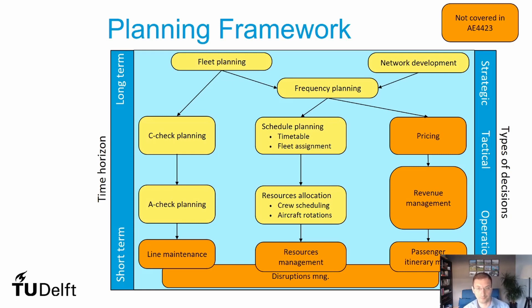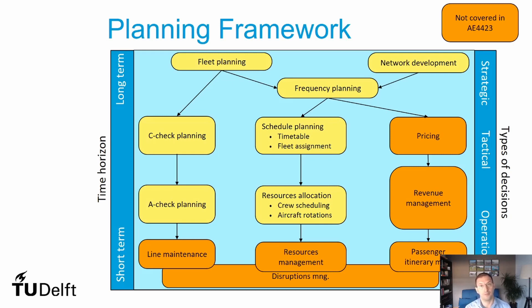Let's start with the middle one. At the tactical level, one year before operations, we start defining our timetable — so, to where are we going to fly and at what time — and also the fleet assignment, to determine what capacity we're going to have in each flight by allocating an aircraft type to those flights. Then, closer to operations, let's say one to two months before operations, we start allocating in more detail the resources to these flights. We define the crew that is going to operate each flight — that's the crew scheduling — and we define which specific aircraft, the tail number, is going to operate each flight, in a way that they make a route that has the aircraft start at their hub location and come back to their hub or maintenance location.